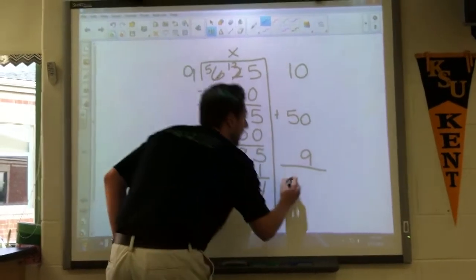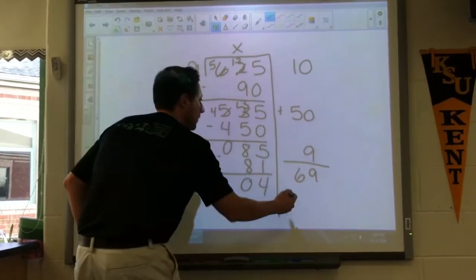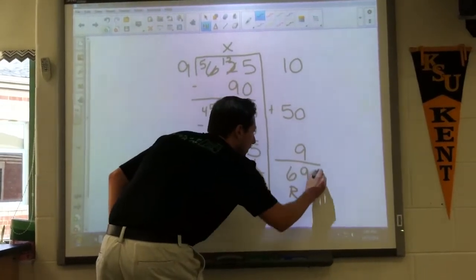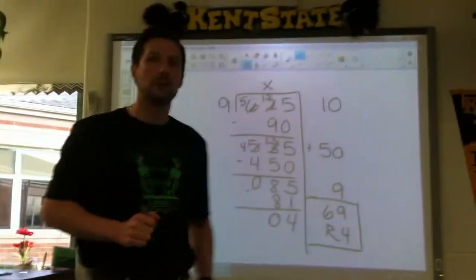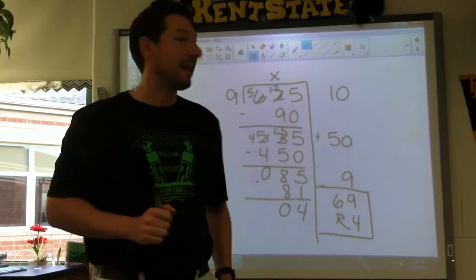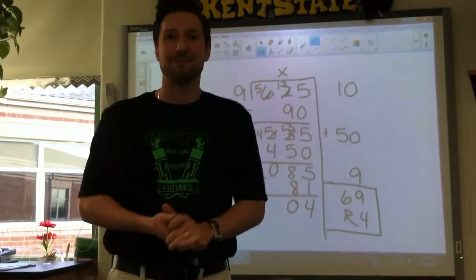10 and 50, 60, 9. Remainder 4. Box that up. And that's it. That's what we're doing in class. That's called partial products long division. And I hope that helps.